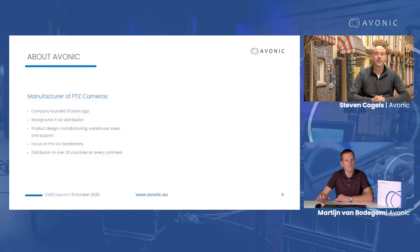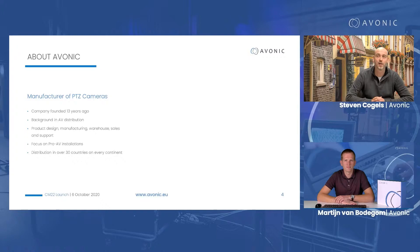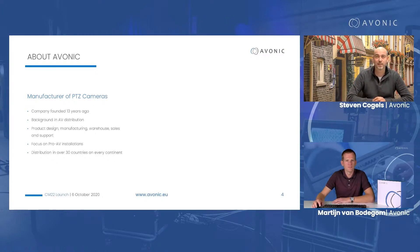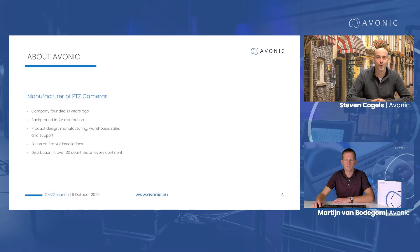If you're not familiar with Avonik, we are a manufacturer of PTZ cameras, fixed cameras, and accessories for fixed installations. The company was founded about 13 years ago and our background is in AV distribution. We're in control of product design, manufacturing, warehousing, sales, and support — everything done from the Netherlands and shipped from the Netherlands. We really focus on pro AV installations, which is quite unique for a company to remain focused on the installation and integration world. Currently we have distribution in over 30 countries on every continent.